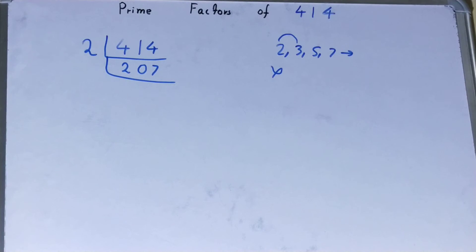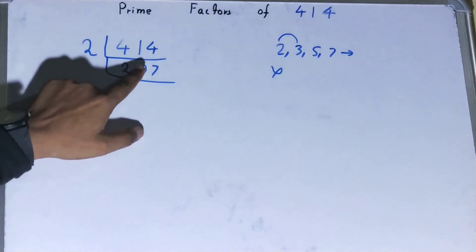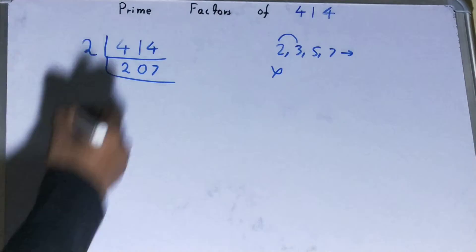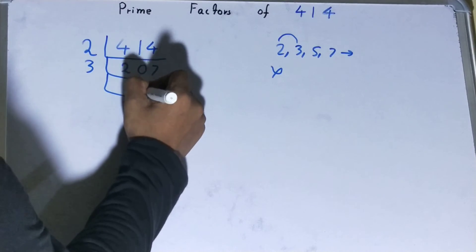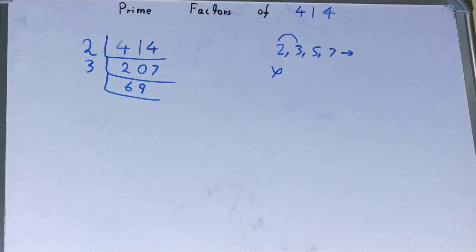Is this 207 divisible by three? Let's see, three, six, eighteen, two, seven, yes, with three it is divisible. So divide it, three, six, eighteen, nine. Now further on, is this 69 divisible by three? Yes it is divisible.